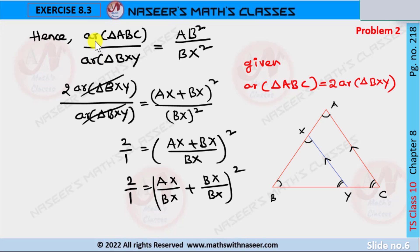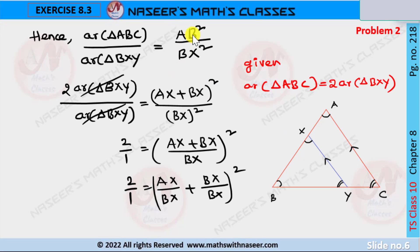When triangles are similar, we can also write that the ratio of the area of the similar triangles is equal to the ratio of the square of their corresponding sides. So here, area of triangle ABC by area of triangle BXY is equal to AB squared by BX squared.